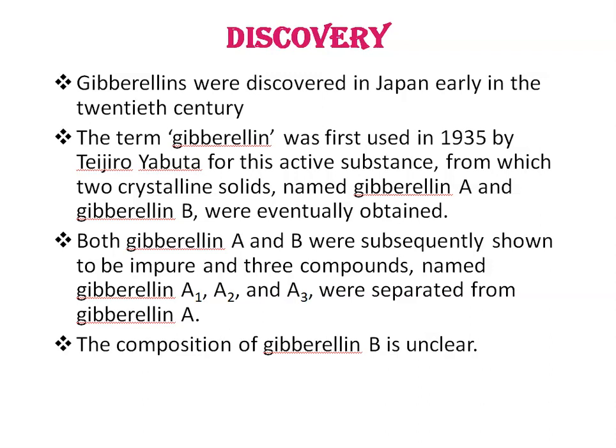From this fungus, an active principle was extracted that reproduced the bakanae symptoms when applied to rice plants. The term gibberellin was first used in 1935 by Yabuta for this active substance, from which two crystalline solids named gibberellin A and gibberellin B were eventually obtained. Both were subsequently shown to be impure, and three compounds named gibberellin A1, A2, and A3 were separated from gibberellin A. The composition of gibberellin B remains unclear.